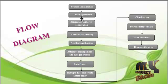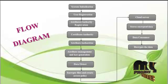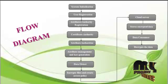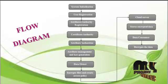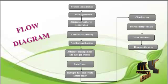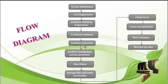After registration, the user will get attribute authority registration. The attribute authority will also get details from the data owners. After verifying the attribute authority, the key will be generated — meaning the attribute authority defines the user's details.